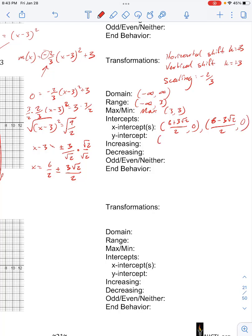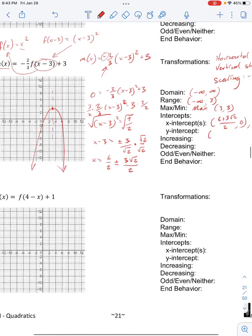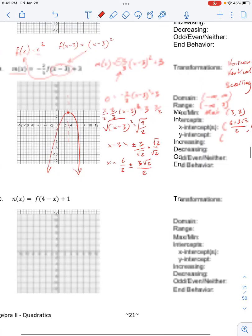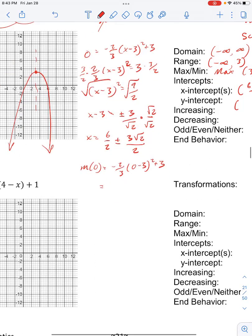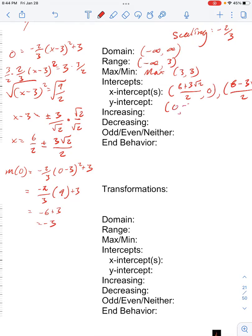We have a y-intercept, that is when x equals 0. So plugging x equals 0 into the equation, so m of 0 equals negative 2 thirds times 0 minus 3 squared plus 3. That gives us negative 2 thirds times 9 plus 3, which is negative 6 plus 3, which is negative 3. So our y-intercept is at 0, negative 3.